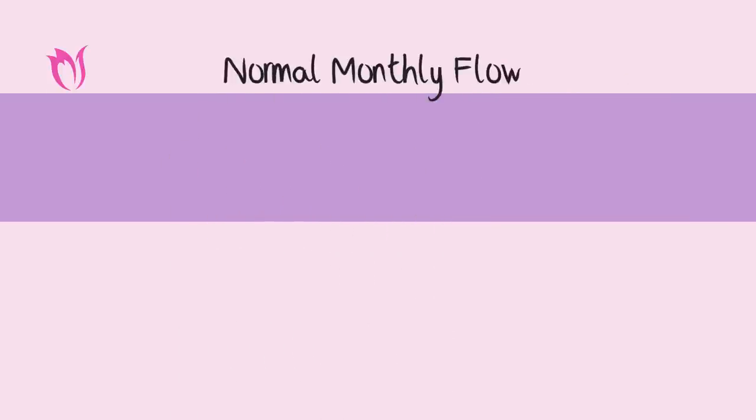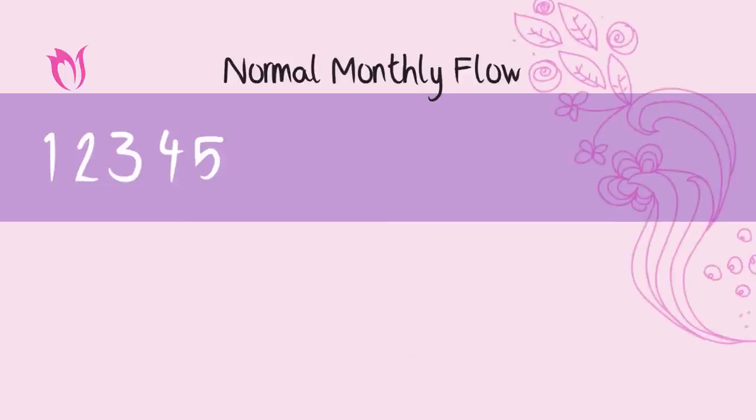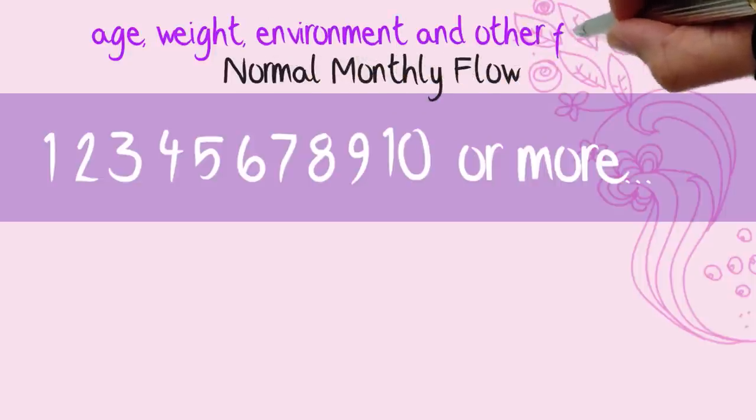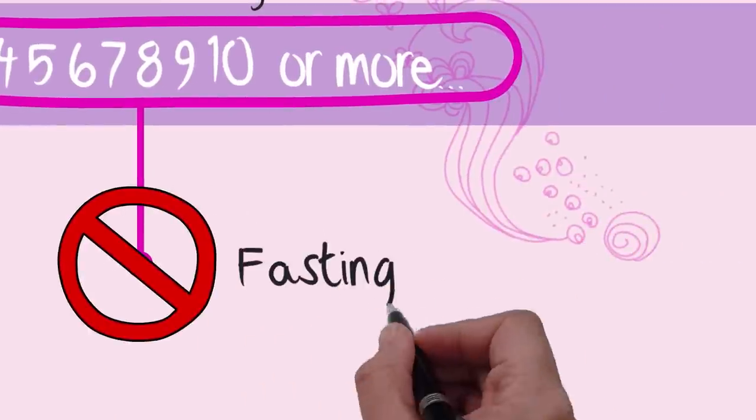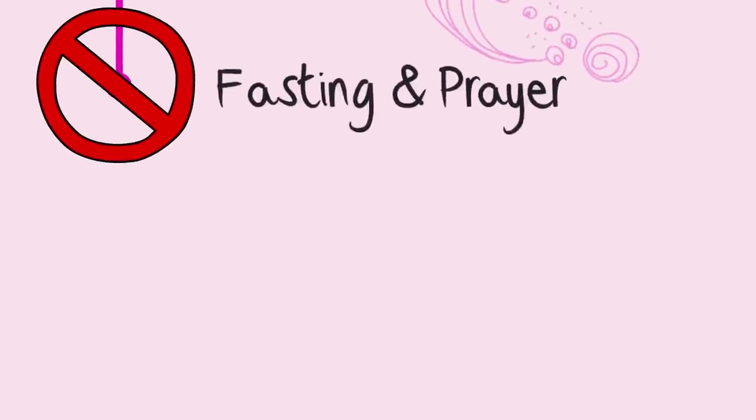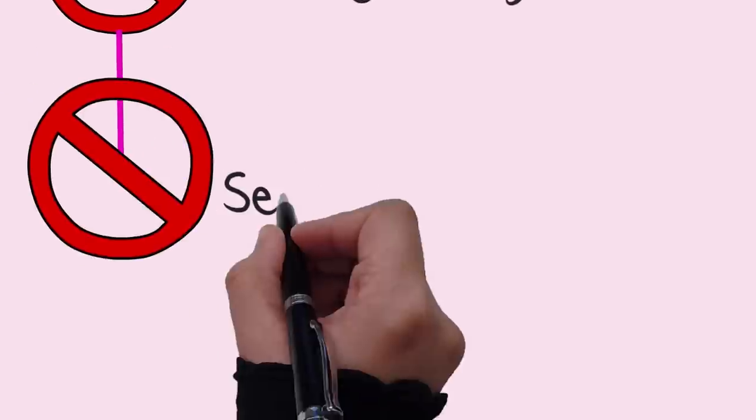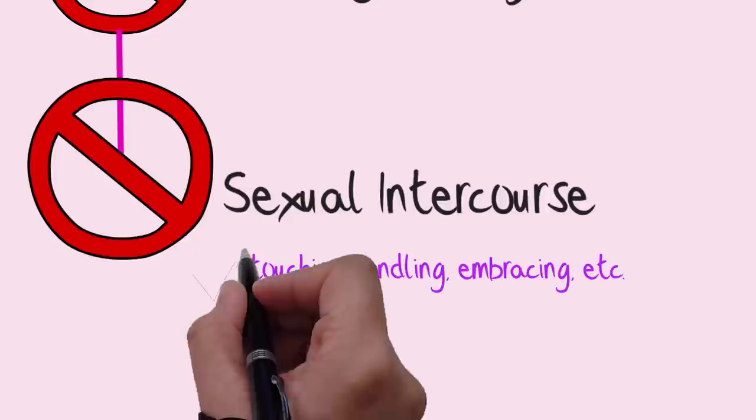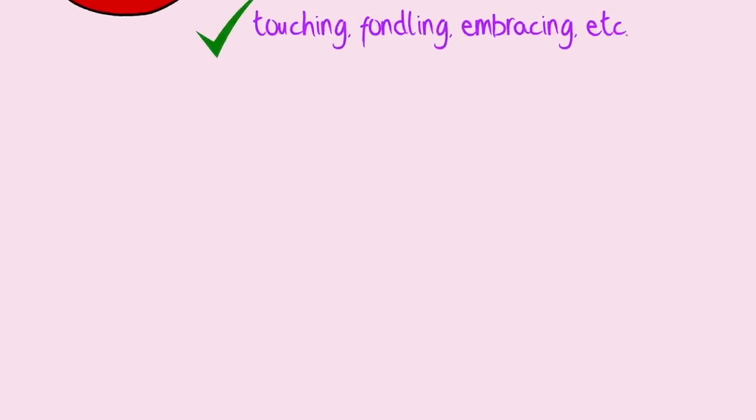A normal monthly flow usually lasts about 3 to 5 days, and of course it can vary from woman to woman and even last up to 7 days, 10 days, or even more depending on the age, weight, environment, and other factors. During these days you are excused from fasting and prayers. Islam has prohibited the husband to join with his menstruating wife during these days. Apart from that, touching, fondling, embracing, everything is possible.